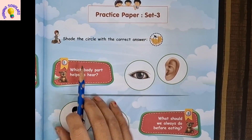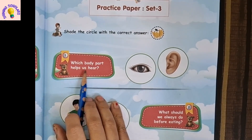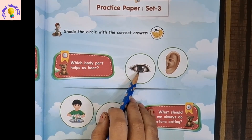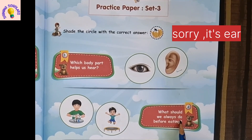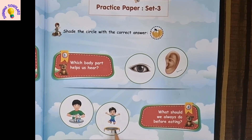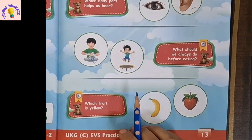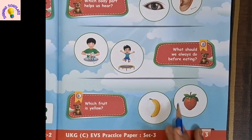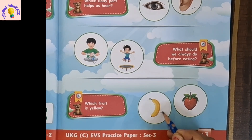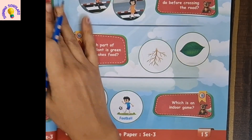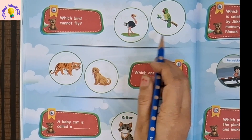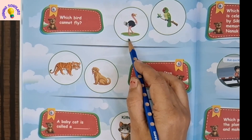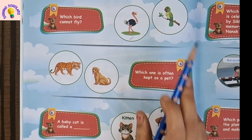Next set is set 3. First question: which body part helps us to hear — eye or ear? It's ear. What should we always do before eating — wash our hands or jump? Wash our hands. Which fruit is yellow in color — banana or strawberry? Banana is yellow in color. Next question: which bird cannot fly — ostrich or parrot? Ostrich cannot fly; parrot can fly.